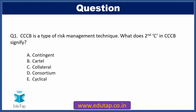As per our first question: CCCB is a type of risk management technique. What does the second C in CCCB signify? We have been given five options — Option A: Contingent, Option B: Cartel, Option C: Collateral, Option D: Consortium, Option E: Cyclical. From reading this question, you might feel it comes from the risk management and banking sector topic of the finance syllabus — and you are right. If you have basic awareness of risk management techniques in the banking sector, this question might be a little easy; for others, it might be a little difficult.